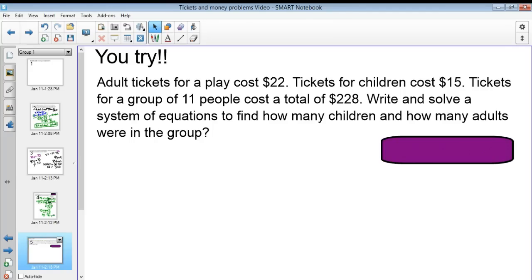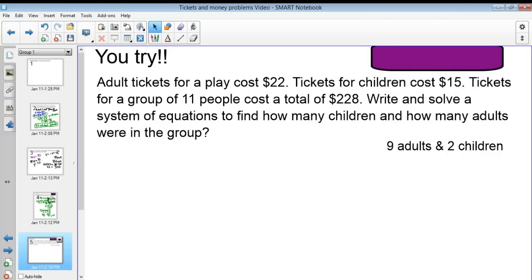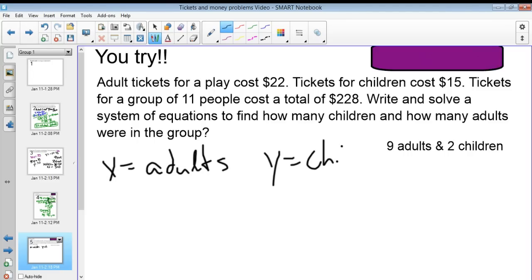By now, hopefully you found that the answer is equal to 9 adults and 2 children. If you haven't, you're going to have to watch this video or keep watching. If not, then fantastic job. I'm proud of you for getting it right. Have a great night. But let's set it up. So tickets for children are $15. Tickets for adults are $22. I'm going to have X be equal to my adults, and then Y be equal to the children.